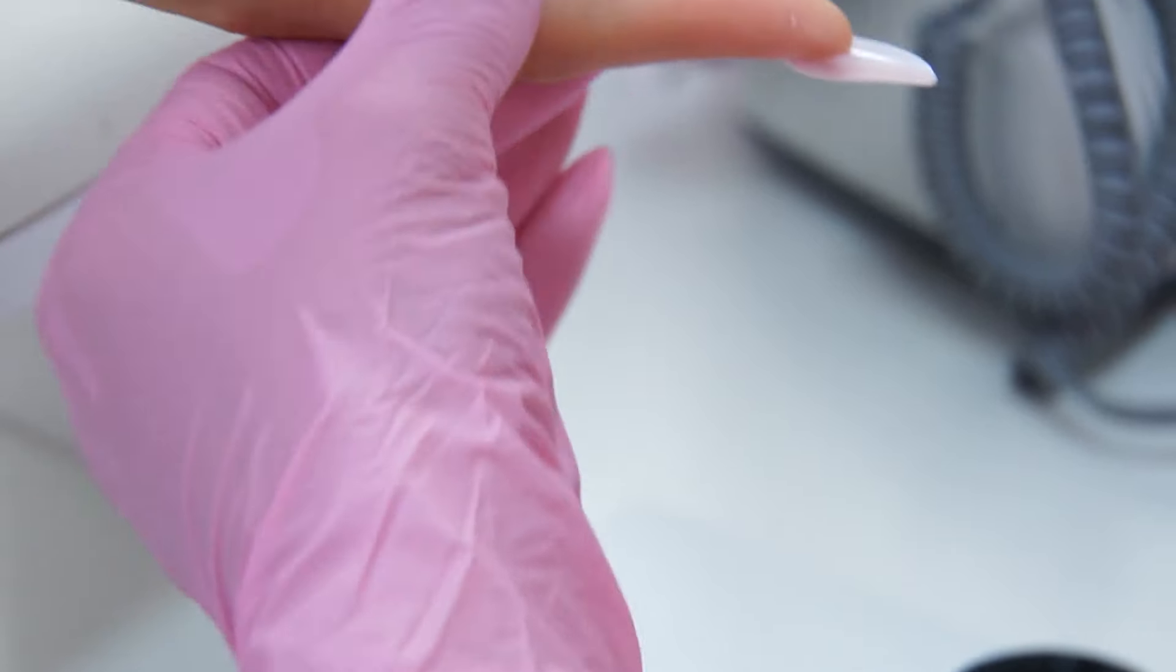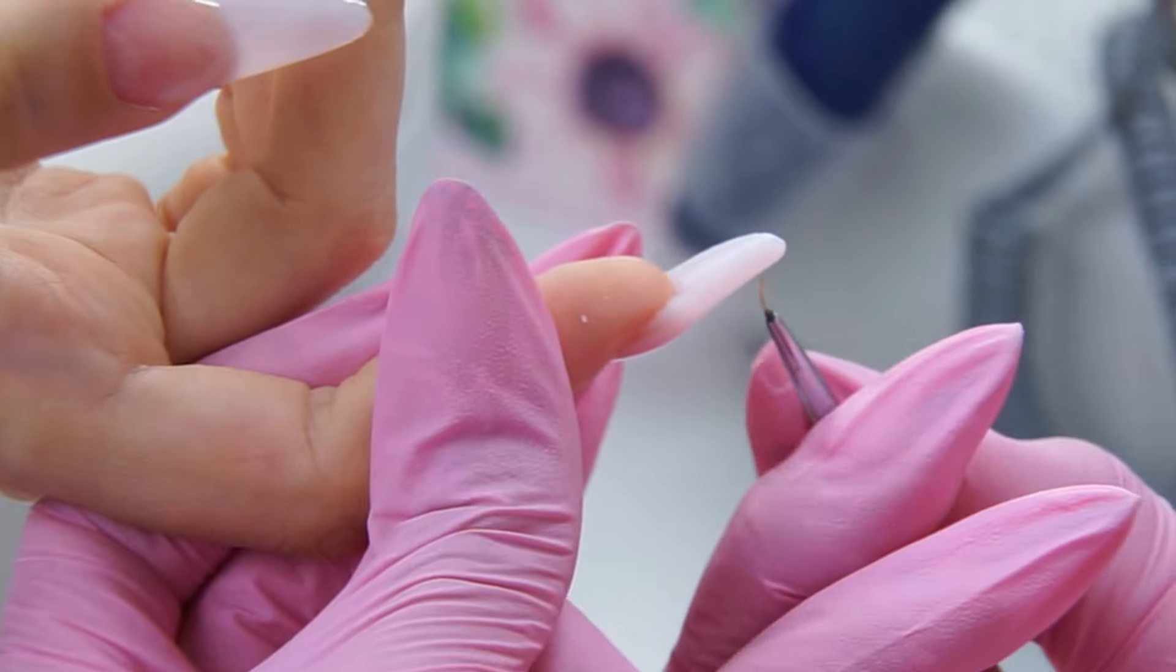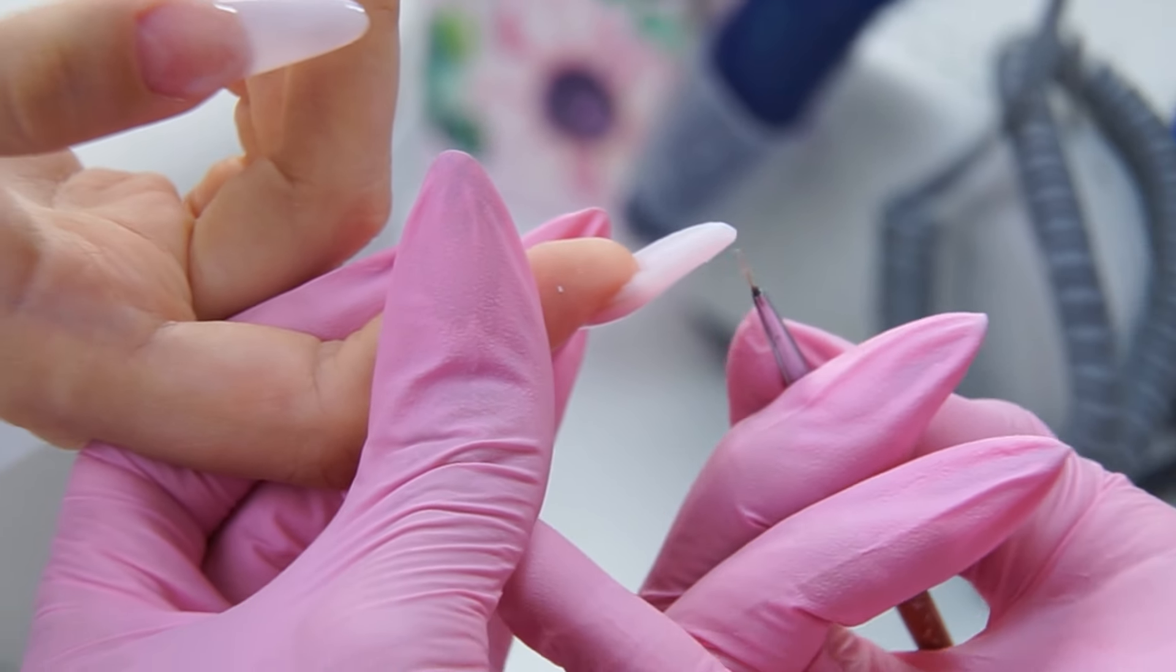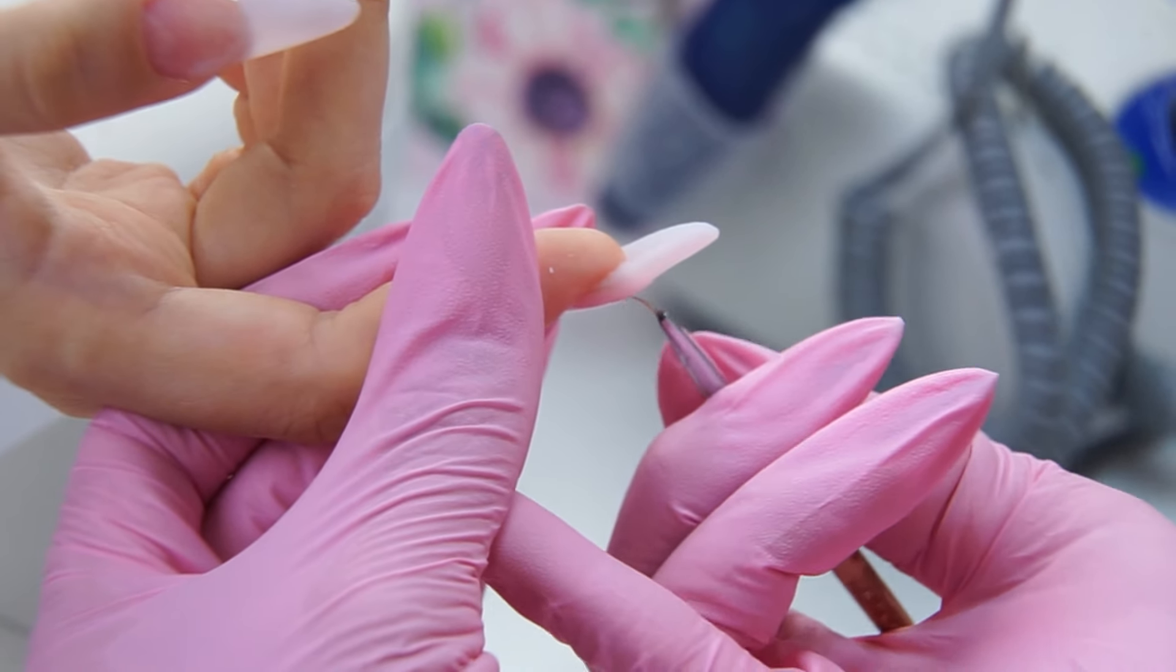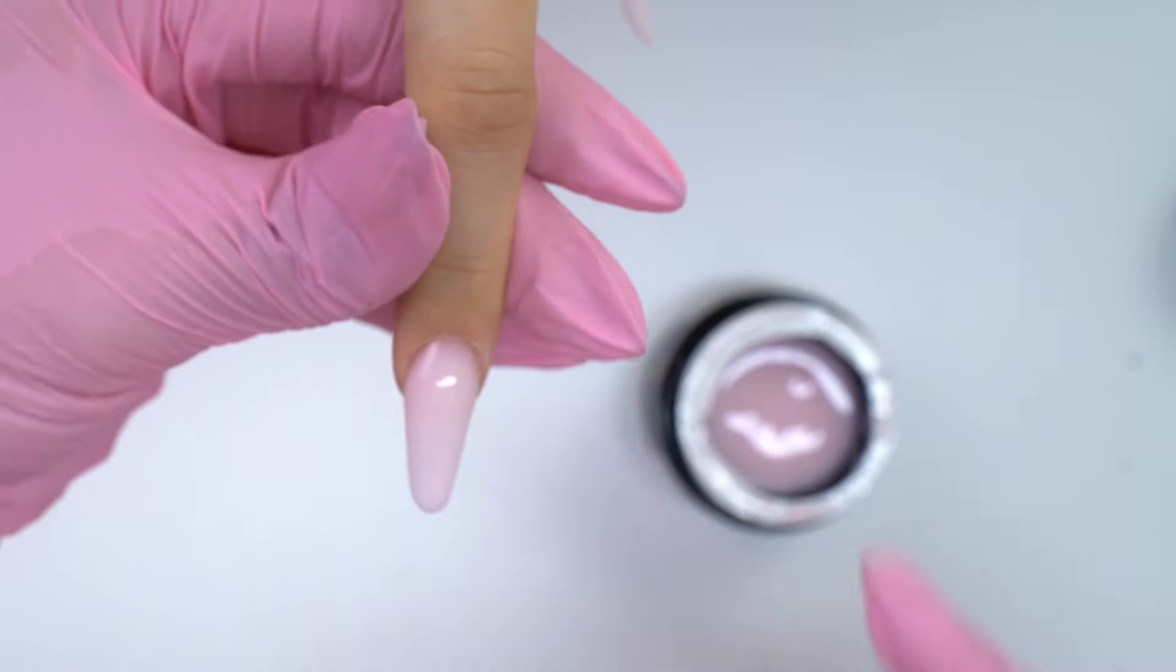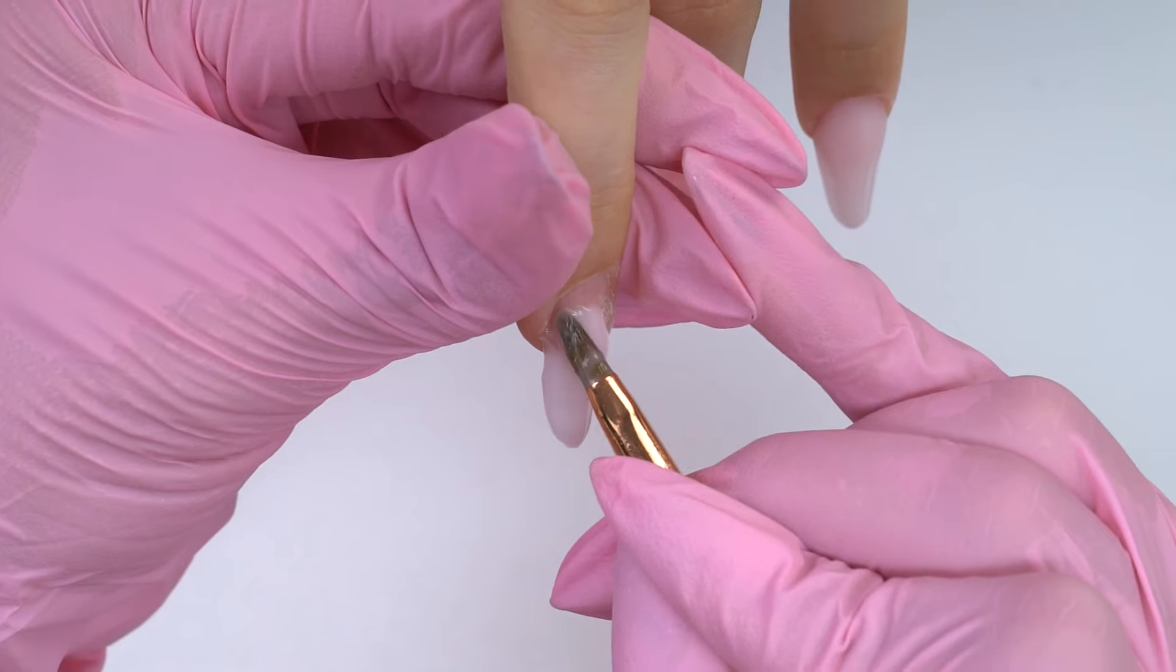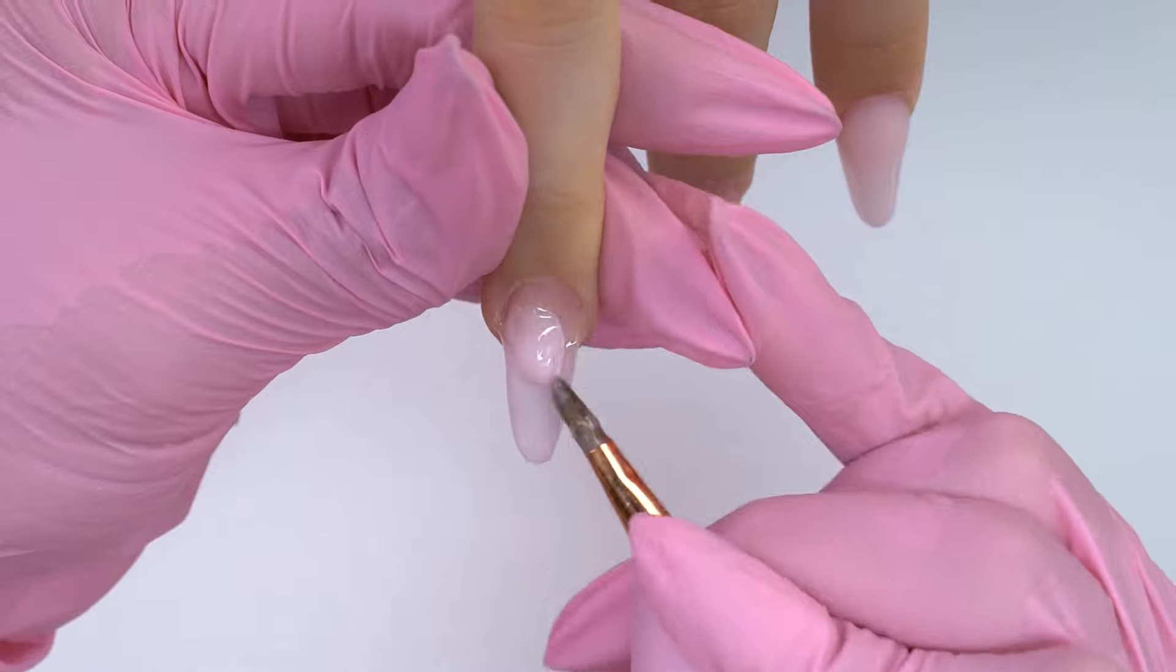I turn the nail over. And spread the gel with a thin brush. To build up correct architecture. And not to file it later. Send it to cure. I do one nail at a time. So that the gel couldn't flow.